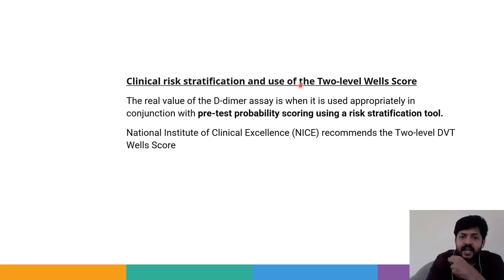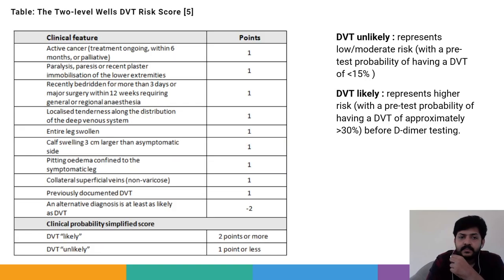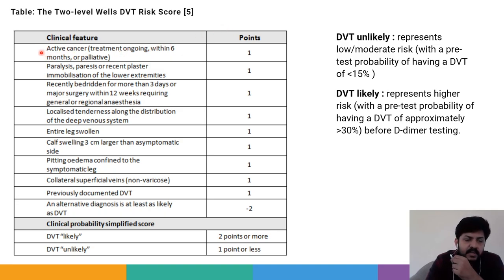Regarding clinical risk stratification, the real value of the D-dimer assay is when used appropriately in conjunction with pre-test probability scoring using a risk stratification tool. NICE recommends the two-level DVT Wells Score. The Wells Score in DVT is different from the Wells Score in pulmonary embolism. There are 10 points in clinical features encompassing both history and clinical examination.